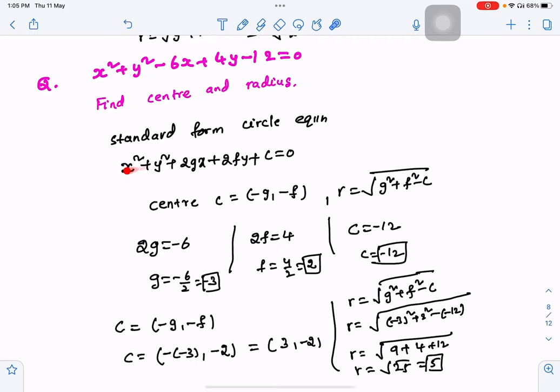The x² and y² value is 1. Then compare the standard form. In the standard form, y² is 1 and x² is 1. Now we have to find the center radius.